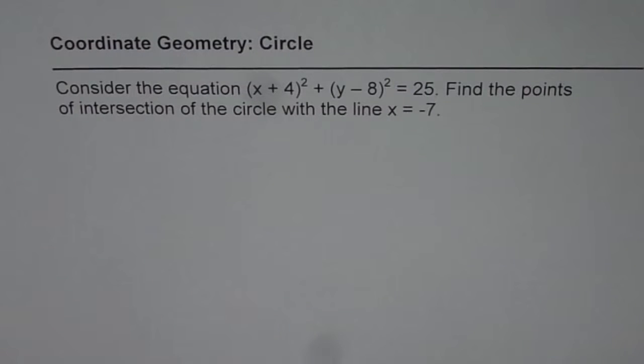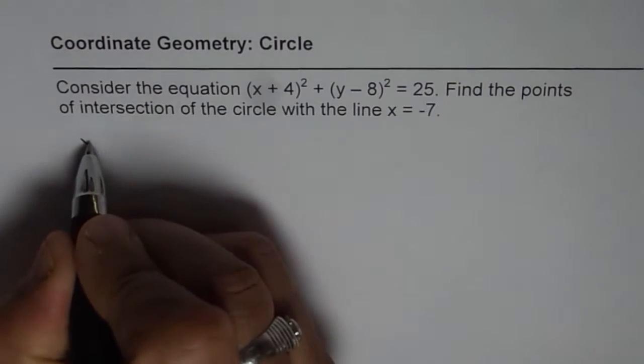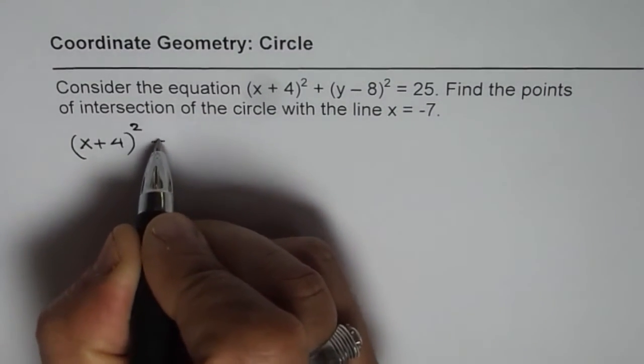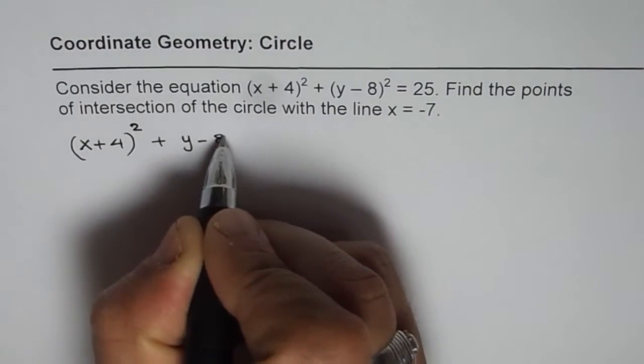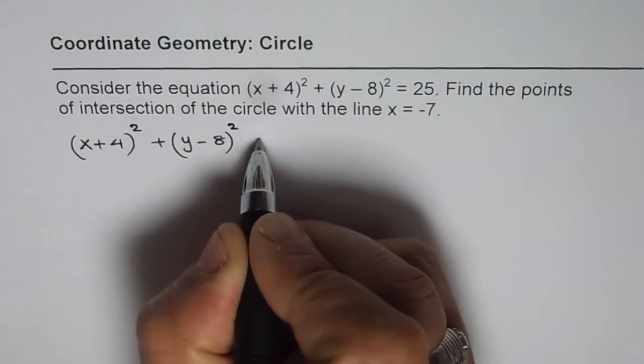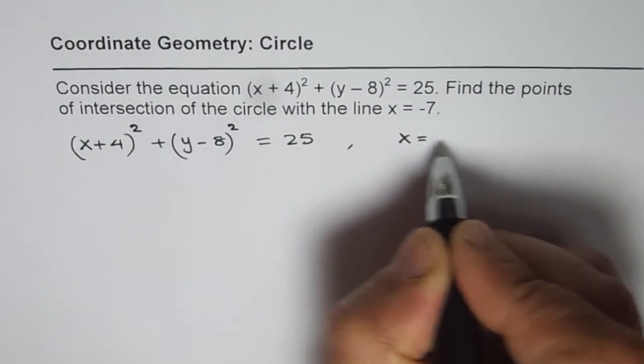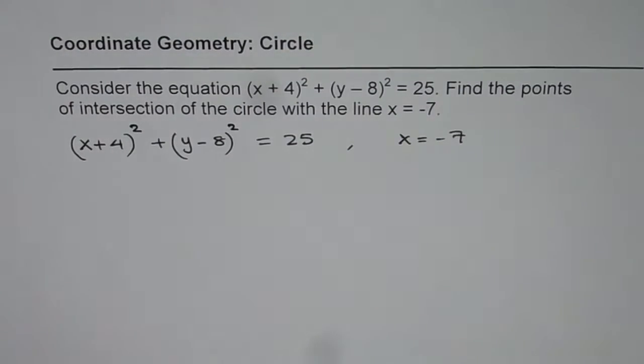Now let's see how to find these 2 points. We are given the equation (x + 4)² + (y - 8)² = 25, and the line is x = -7. So this is a vertical line, correct?